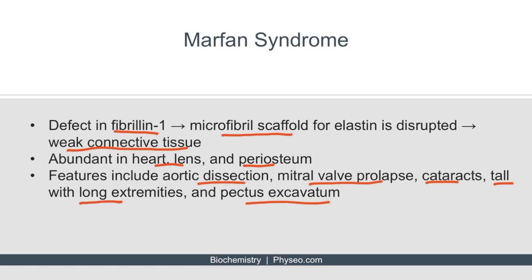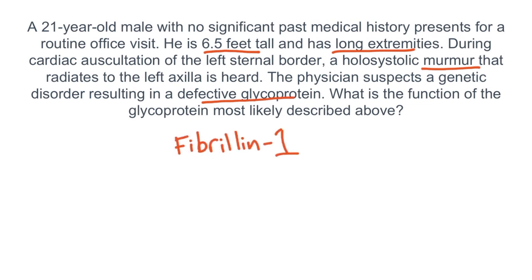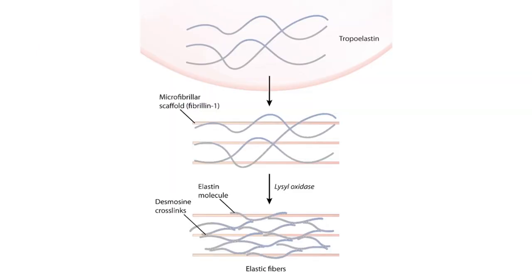Final review question: A 24-year-old male is 6.5 feet tall with long extremities. A holosystolic murmur radiating to the left axilla is heard during cardiac auscultation. The physician suspects a genetic disorder involving a defective glycoprotein. These findings are consistent with Marfan syndrome. The defective glycoprotein is fibrillin 1, and its function is to act as a scaffold for elastin as a component of the microfibrils.